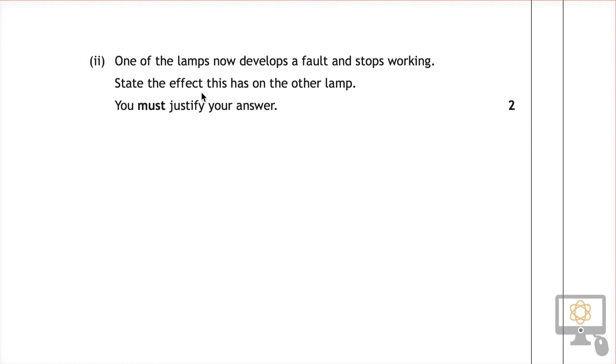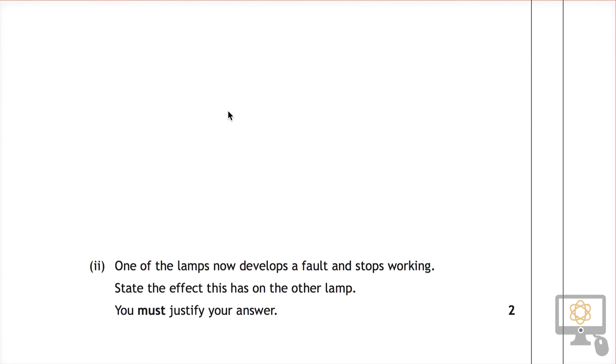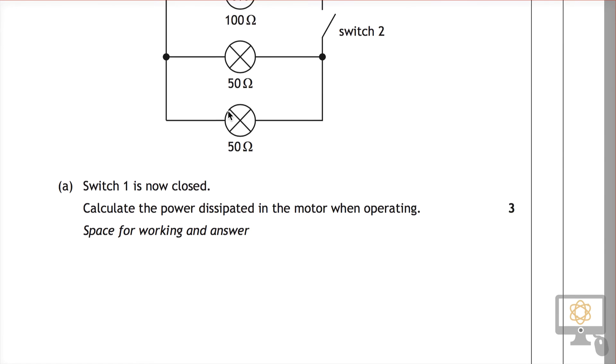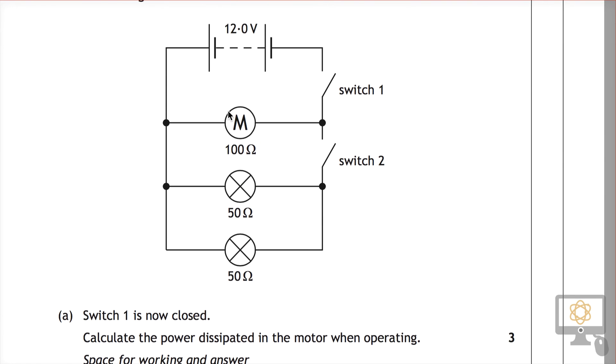That will be one mark for the effect and the other mark for the justification. Now, let's have a look back at the circuit diagram to see what could possibly be wrong. Let's say that this lamp here is the one that develops a fault. Maybe the filament wire melts and the bulb blows, and so no current can travel through this lamp.